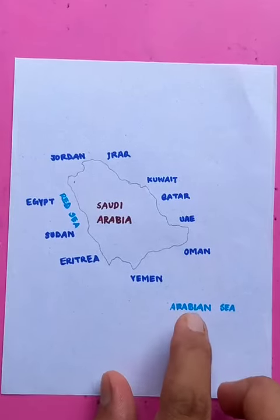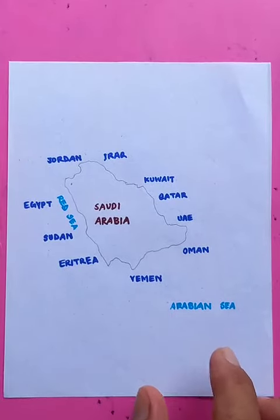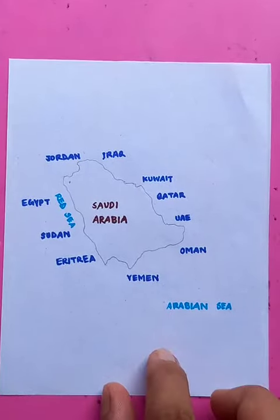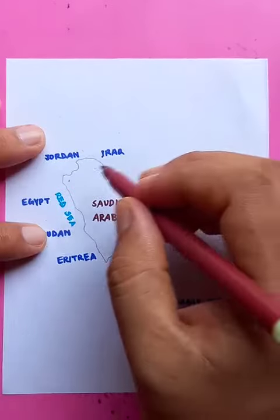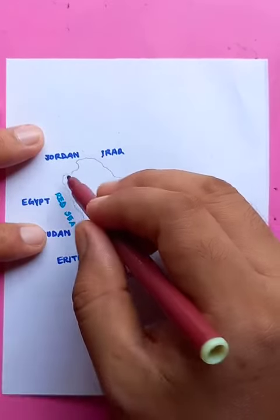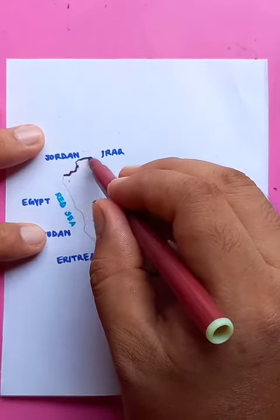Hi, how are you? Let's draw the map of Saudi Arabia here. You can see this is a piece of paper and I'm going to draw the outlines of that country.